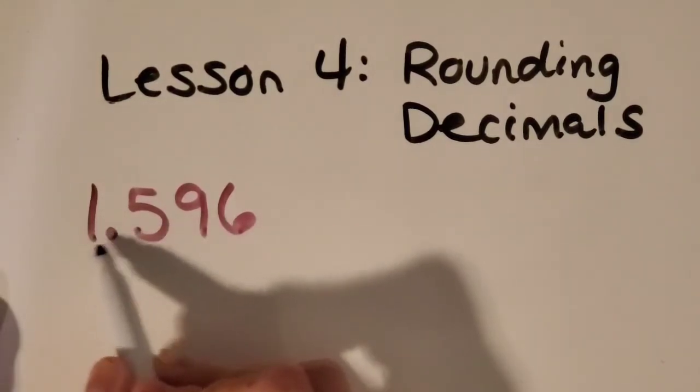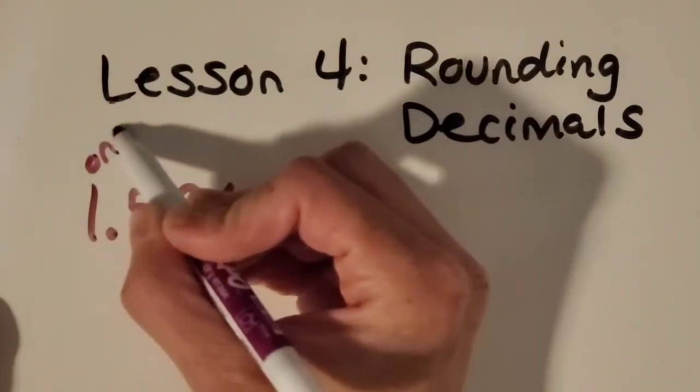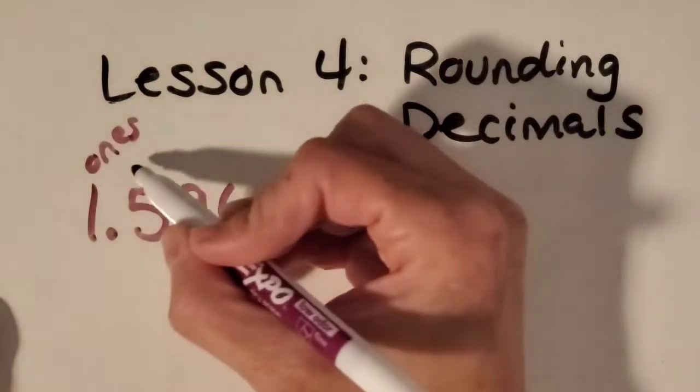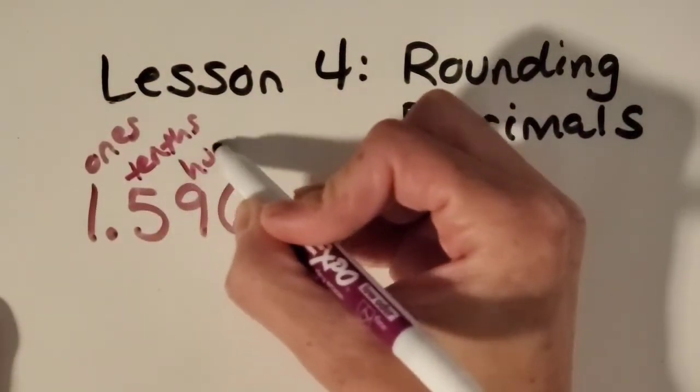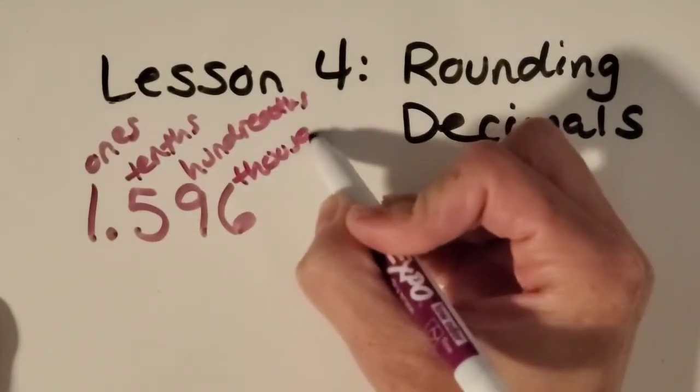So over here on this side of the decimal is the whole number, so this is the ones place. Then our first decimal place value is the tenths, hundredths, thousandths.